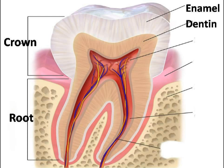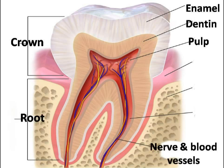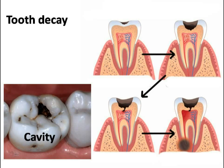Next is dentin, which is made of a yellow bone-like material, but it is softer than enamel. Dentin supports the enamel and gives shape to the teeth. Next is the pulp, which has blood vessels and nerves and supplies nourishment to the tooth. A cavity is actually a hole in the tooth — in the beginning it doesn't hurt, but when it becomes deep enough to reach the dentin or pulp, it causes pain.